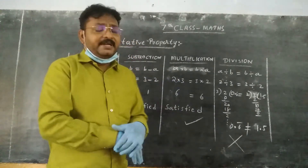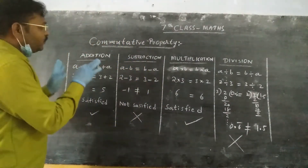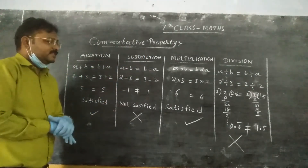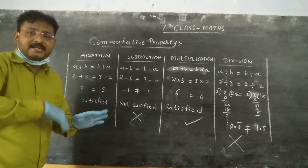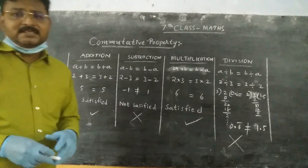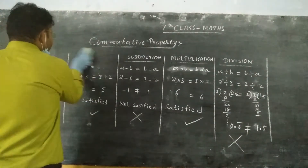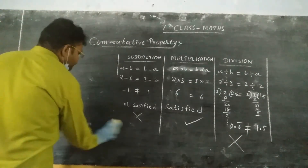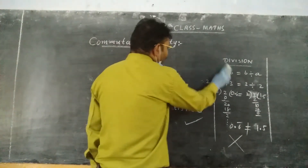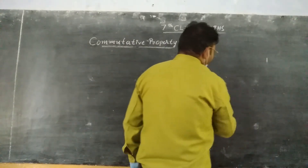So under division, commutative property is not satisfied. In total: commutative property under addition and under multiplication is satisfied; under subtraction and under division it is not satisfied. This is the concept of commutative property on integers. Now I am going to give some problems for you to check and verify whether commutative property is satisfied or not.